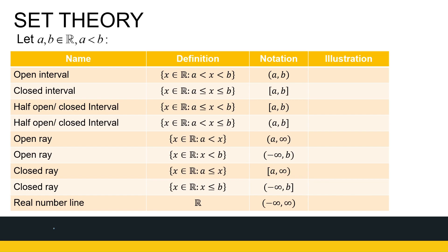If I look at some elements of the real numbers, A and B, where A is less than B, we can have a set that is an interval. Let's look at the first one — an example: the interval (2, 5). The round brackets mean it's an open interval.